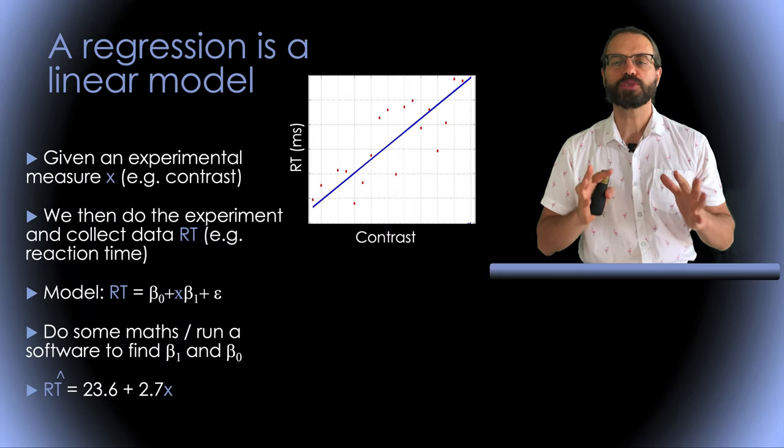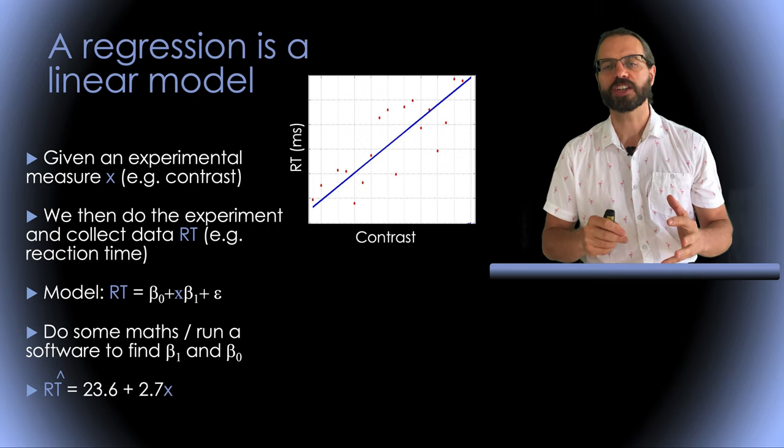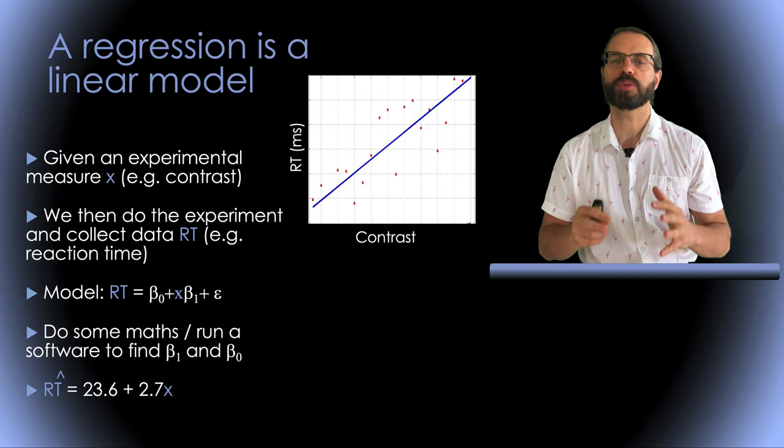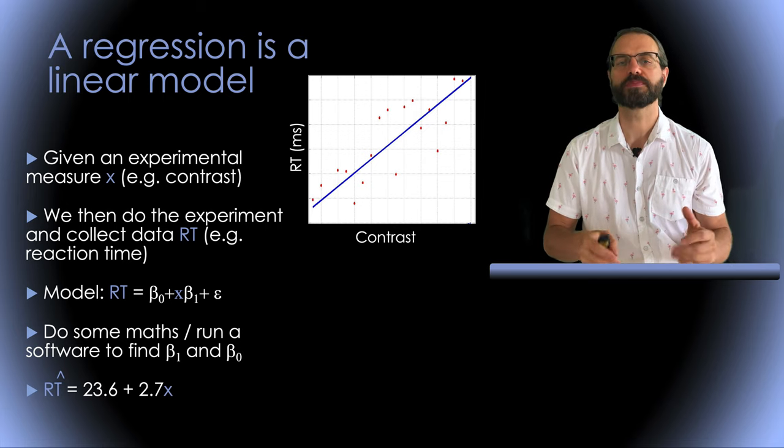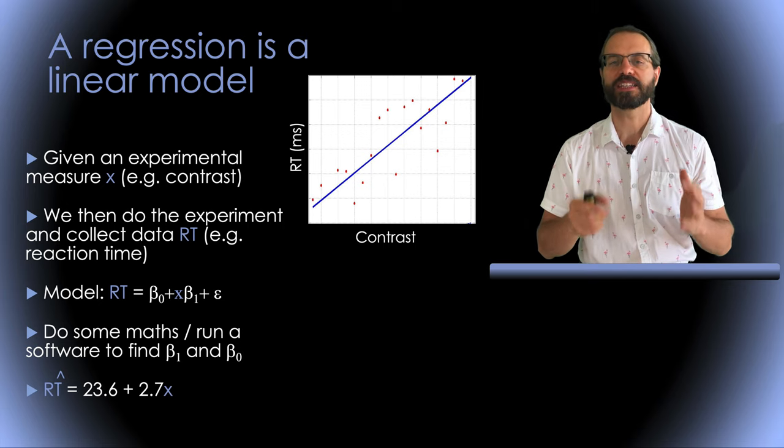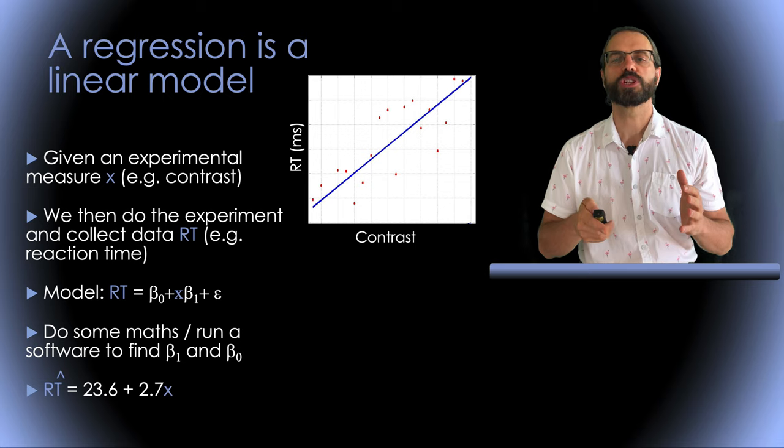Now we want to model this behavior with a linear regression. Our model is that the reaction time is equal to a factor multiplied by the contrast of the image plus a constant and an error term. We will call this constant beta zero which is the intercept and this factor beta one which is the slope.